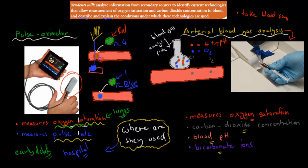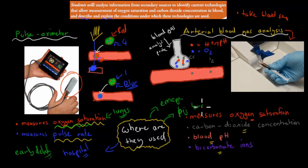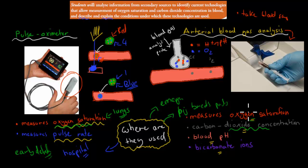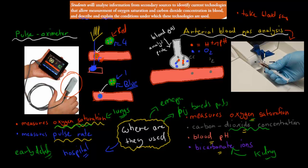If the pulse oximeter reading suddenly drops, nurses know something's going wrong and they can move to the next level: arterial blood gas analysis. This is used in emergencies or when someone has major breathing problems. It provides more detail — not just oxygen levels, but also carbon dioxide levels, which tell you how low or high the pH is. In an emergency, a patient might be unconscious and unable to communicate, but the blood gas analysis results will tell doctors what's happening. The bicarbonate ions also tell doctors how well the kidneys are functioning. They take blood from the patient and put it in the blood gas analysis machine.